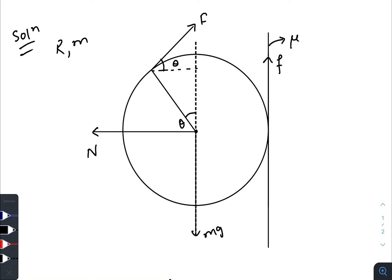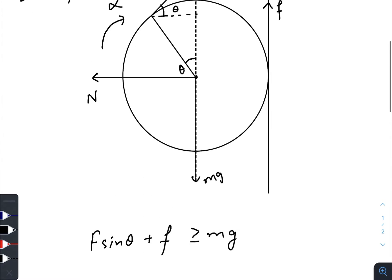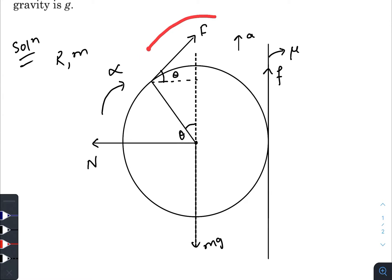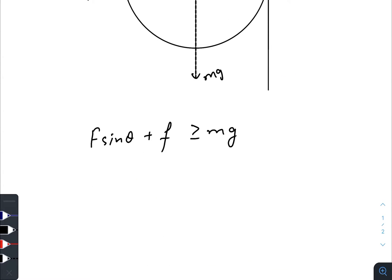Now for pure rolling, the acceleration must be in the vertically upward direction and the angular acceleration must be in clockwise sense. So the torque due to capital F must be greater than the torque due to friction. So F·r must be greater than or equal to torque due to friction. So F must be greater than or equal to small f.